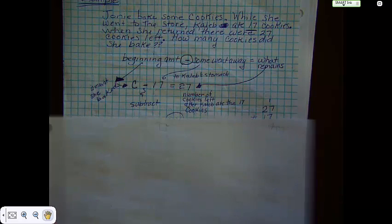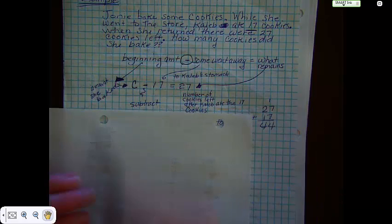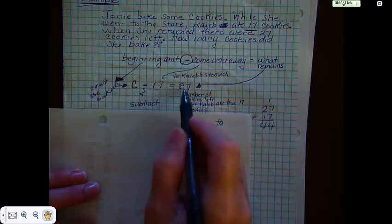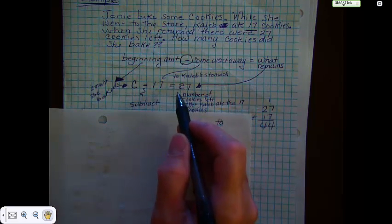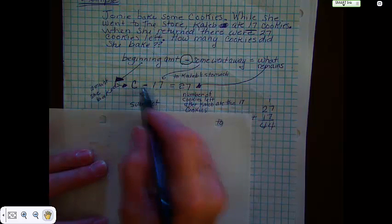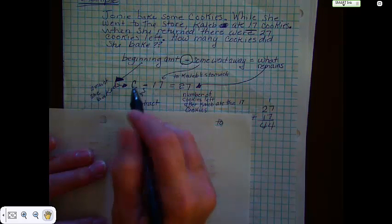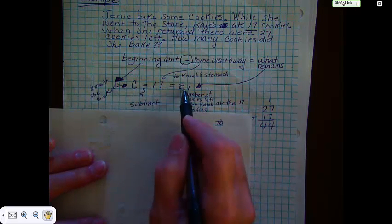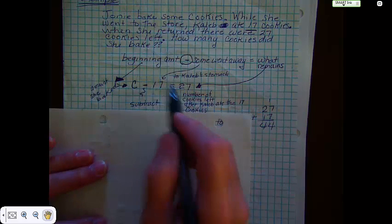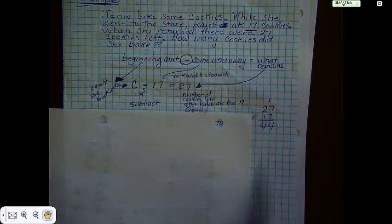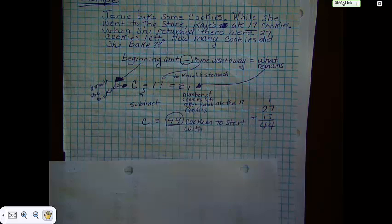Now, if we look at this to solve it, if it's a subtraction problem, we know that we use the opposite operation to solve it. So we would actually, instead of subtracting here, we're going to add 17, because what we're really thinking is what number minus 17 equals 27. So 27 plus 17 should equal that number. And in fact, it does.